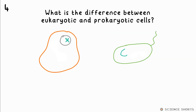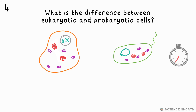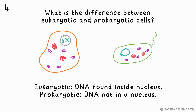What's the difference between eukaryotic and prokaryotic cells? Eukaryotic cells, like your normal plant and animal cells, have their DNA found in the nucleus. For prokaryotic cells, like bacteria, even though they have DNA, it's not found in a nucleus — they don't have a nucleus at all.